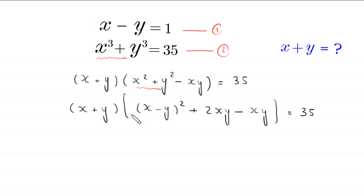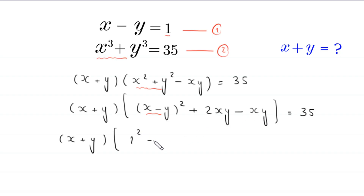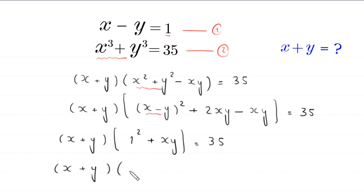Now in this equation, we replace x minus y with the value 1 from equation 1. So this becomes x plus y times 1 squared plus 2xy minus xy, which simplifies to x plus y times 1 plus xy, equal to 35. Let's call this equation 3.